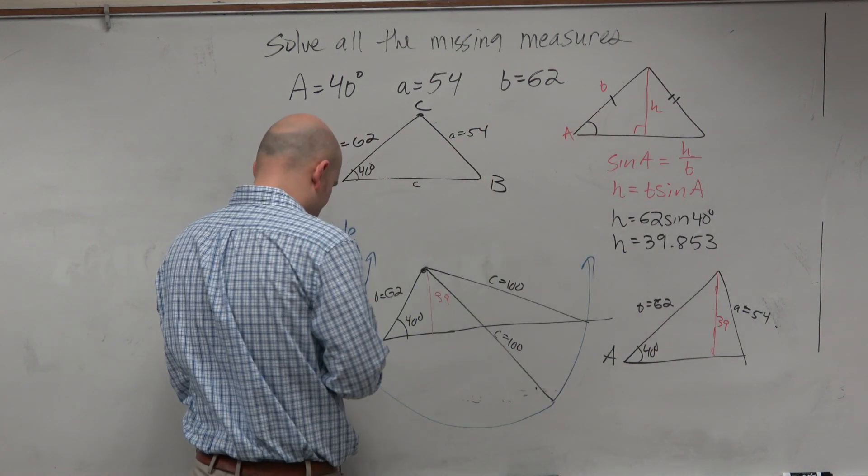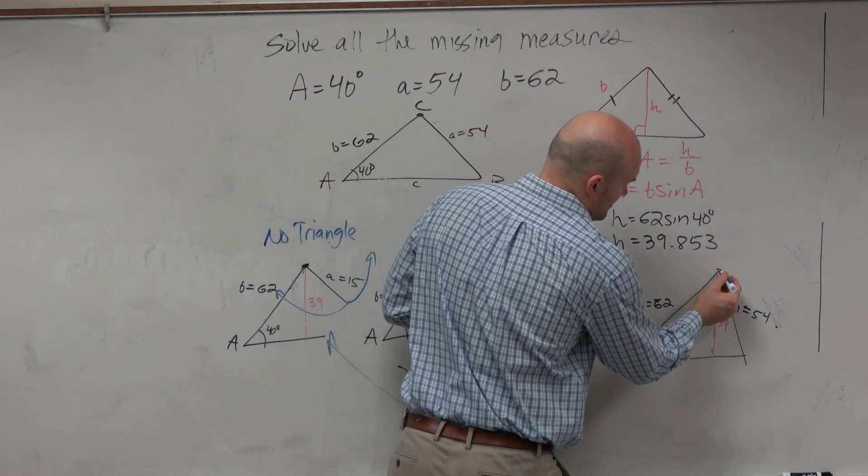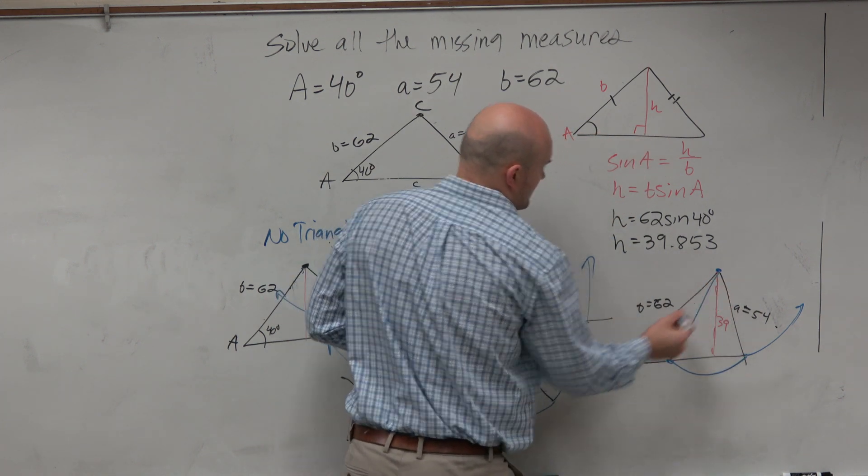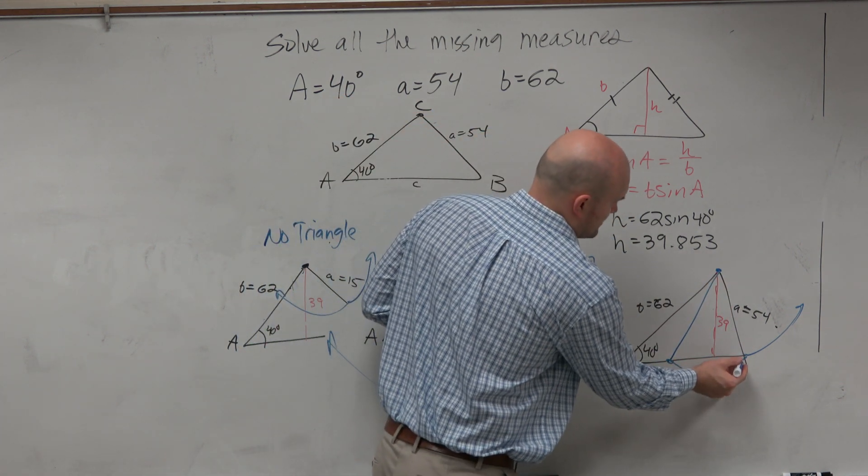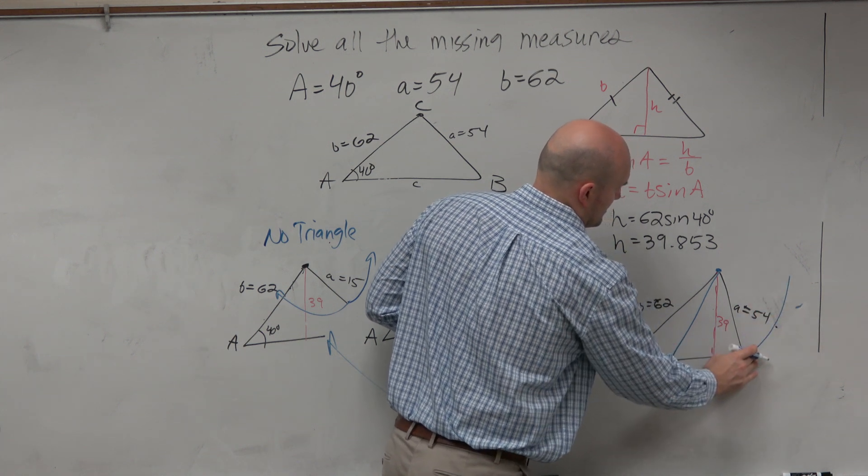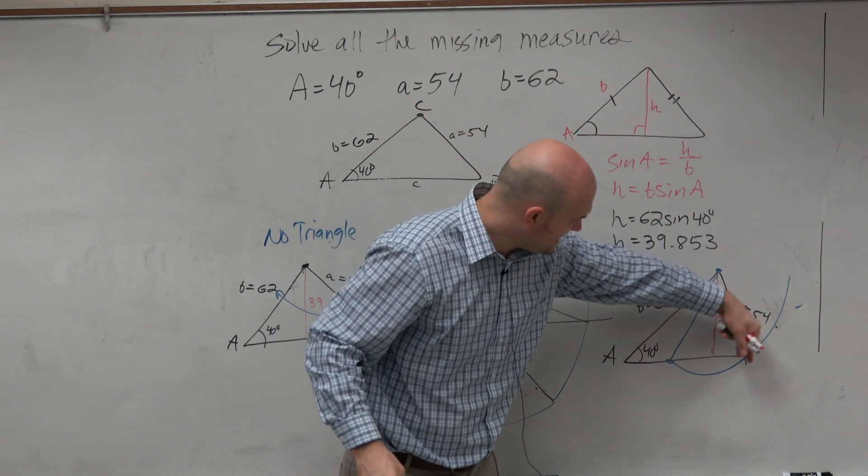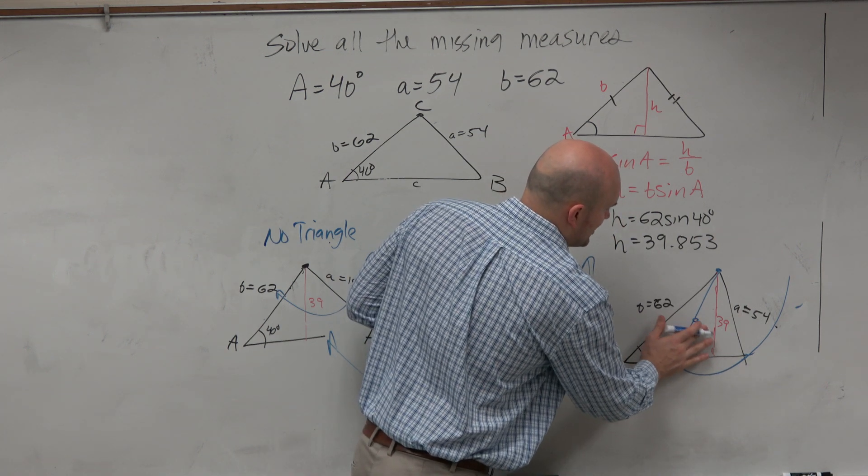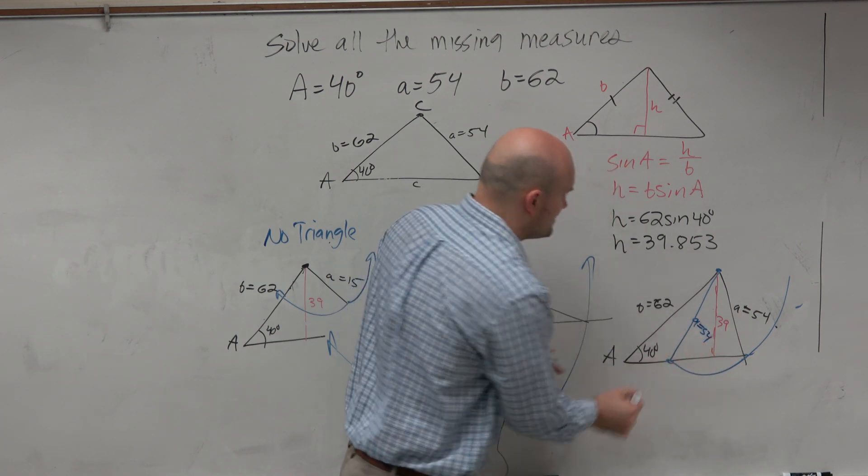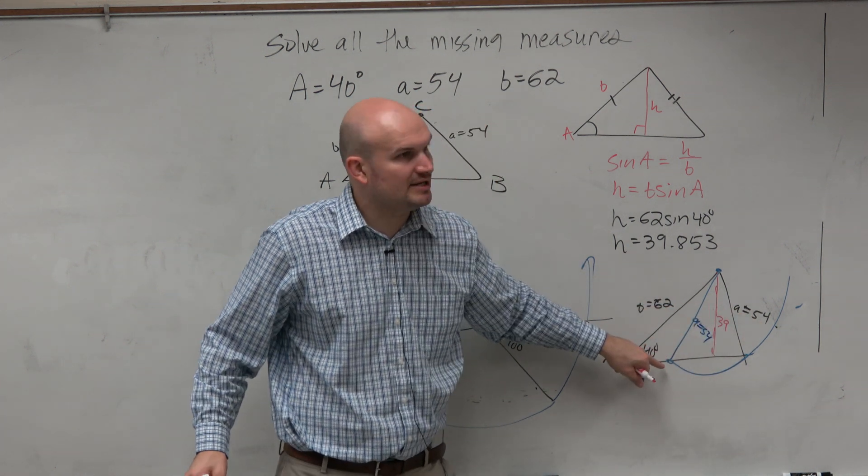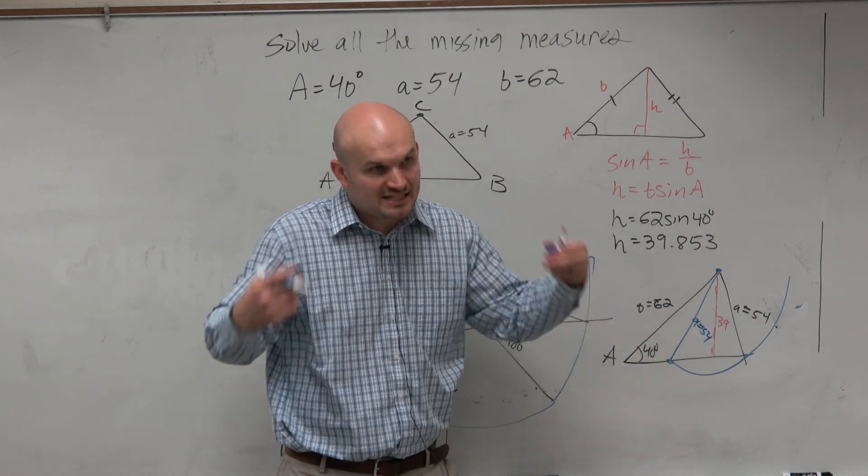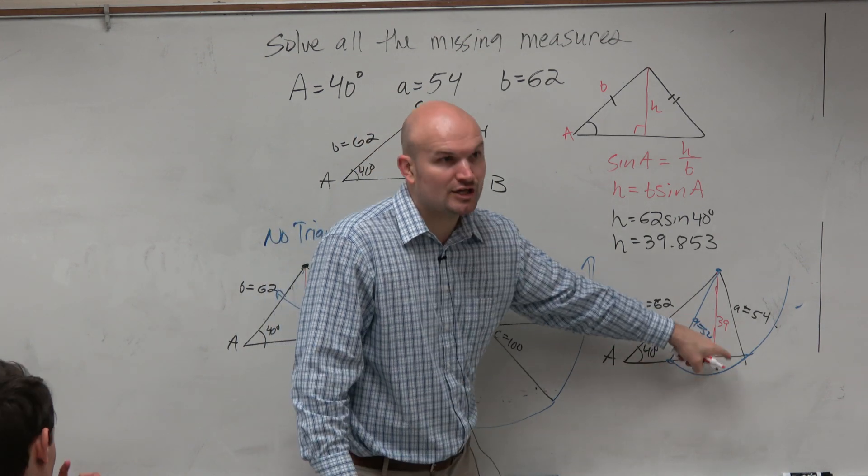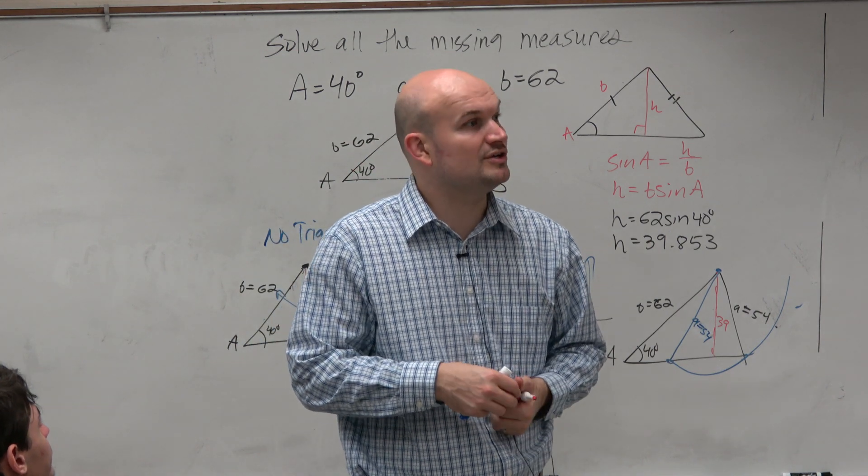As I rotate this triangle, you can see that as I rotate it in, since that side length is shorter, since this is shorter than that, you can see that it's going to create another triangle. That's why there's two triangles that exist. There is the obtuse triangle and the acute triangle.